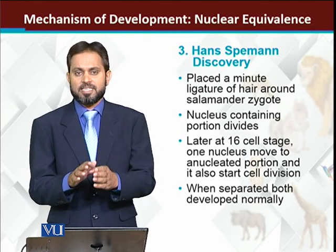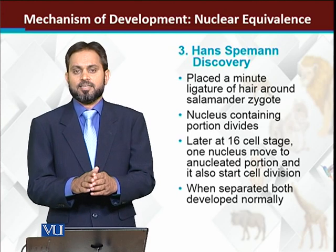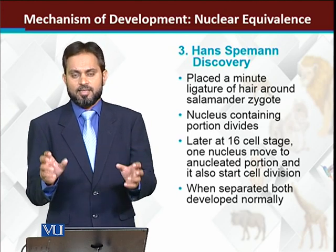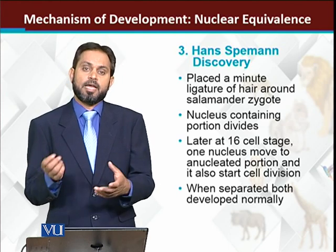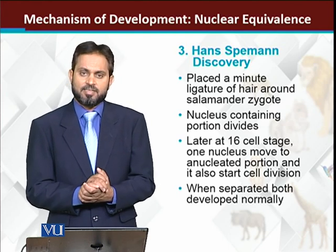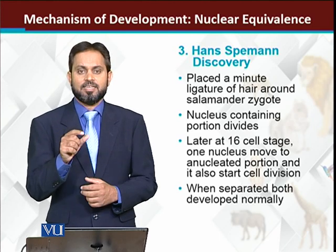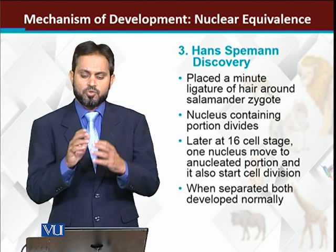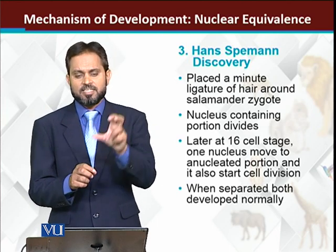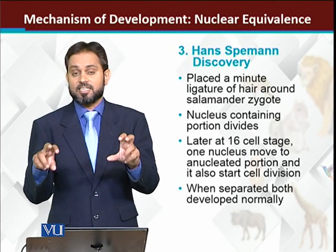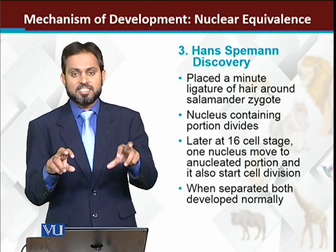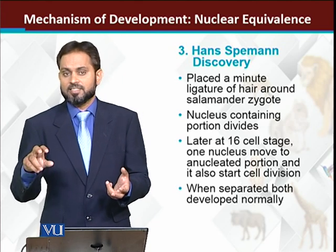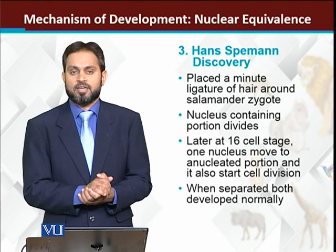Spemann also observed in some experiments that the nucleus was present on both sides, but proper development was occurring on one side while abnormal development was occurring on the other side. Upon closer investigation, he noticed that the fertilized egg has a gray crescent, and the gray crescent was going to one side but not to the other. Where the gray crescent went, development was normal; where it did not go, the cell was dividing abnormally.